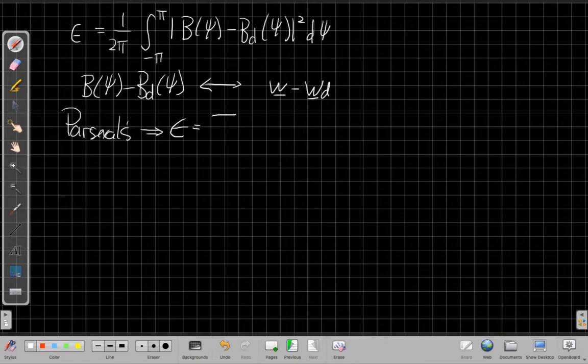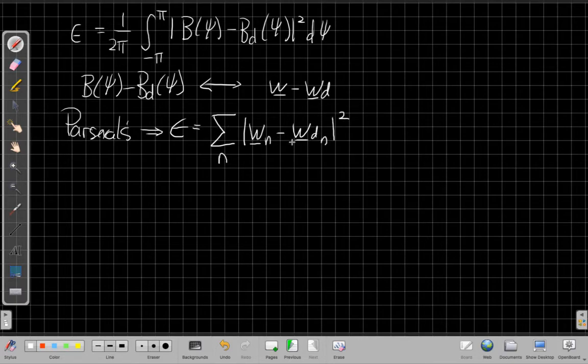Using Parseval's theorem, we can also write E as the sum over the whole array of the difference between my new and my original vector magnitude squared. Take the complex, subtract them element by element, take magnitude squared of those complex numbers and add them up over the array, which is the same way to say I want the norm squared of the difference between these two vectors. If I think about linear algebra terms, this is the difference between the two vectors, magnitude squared.